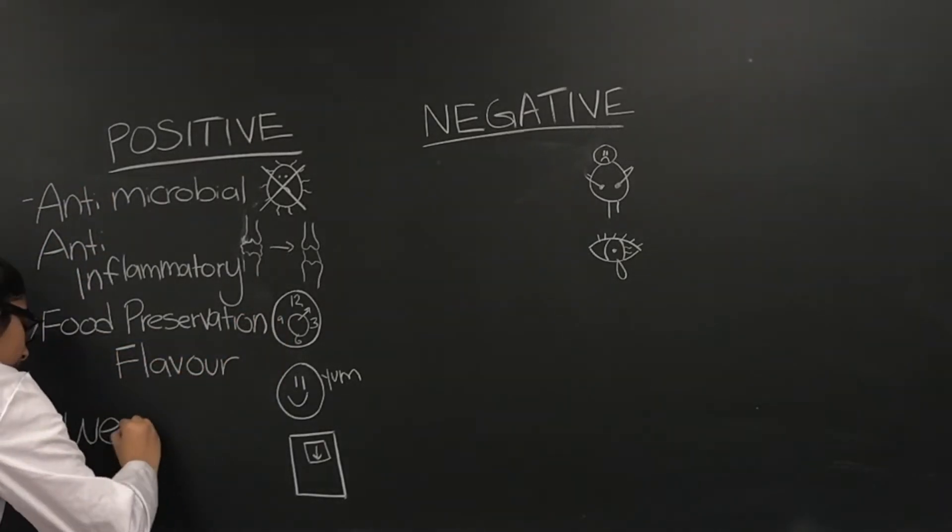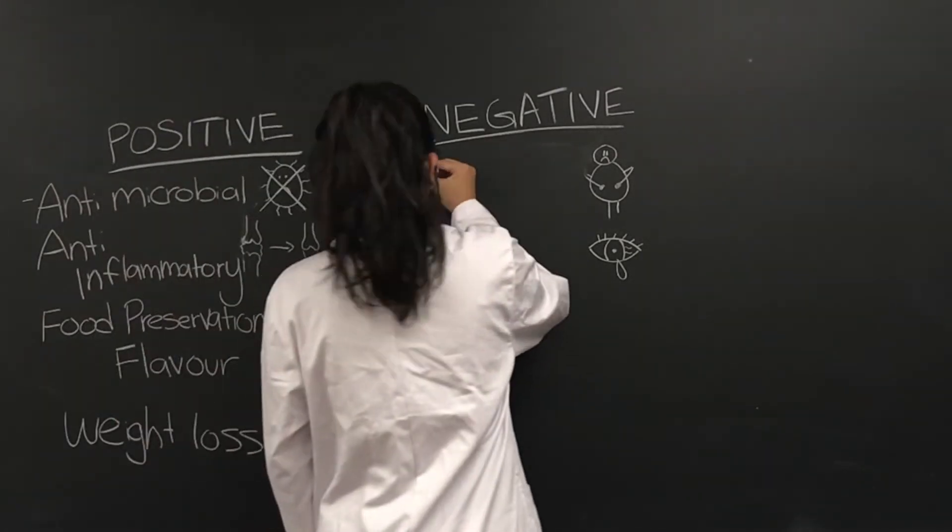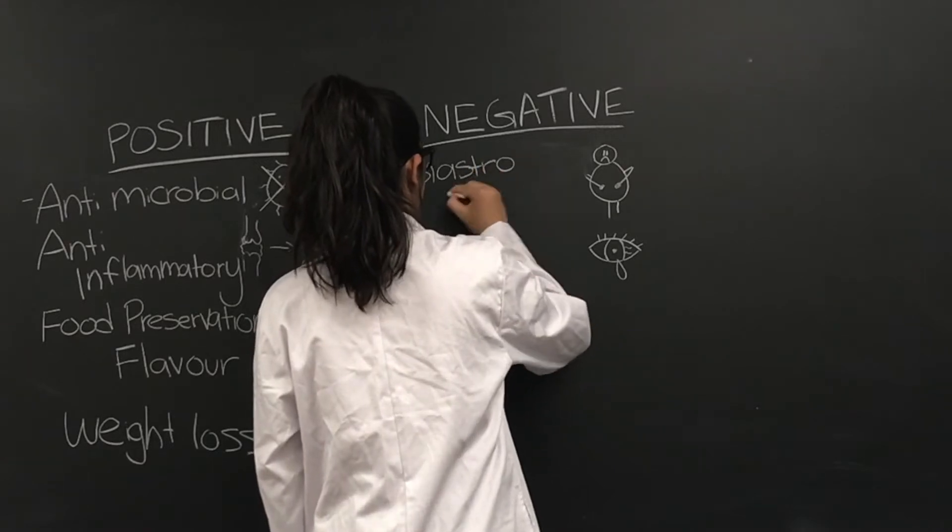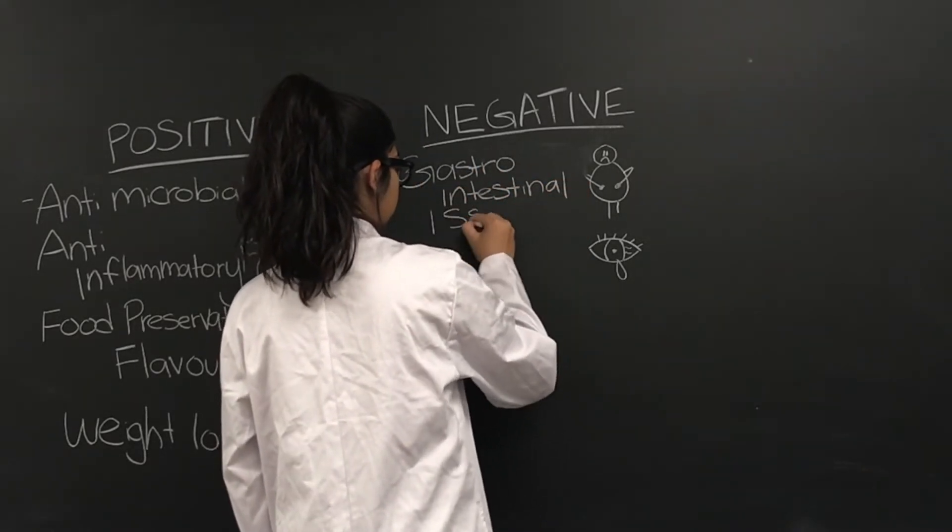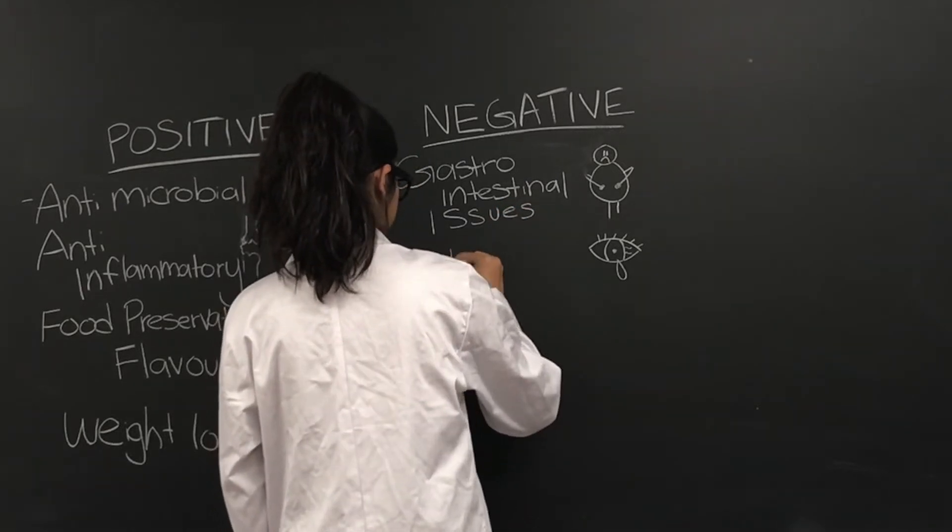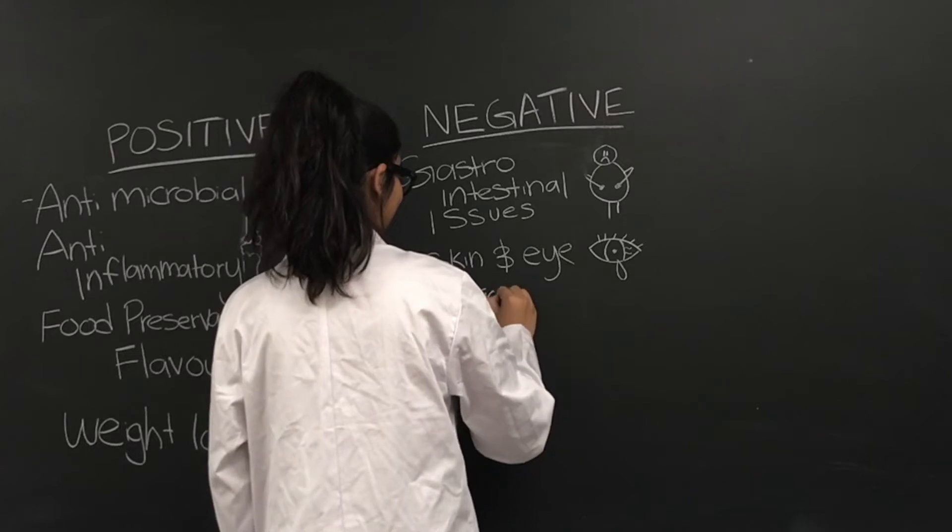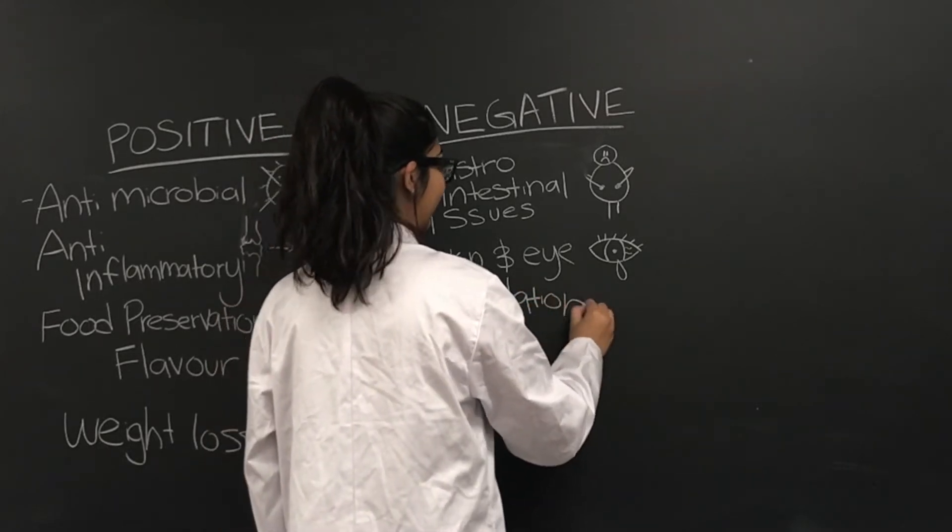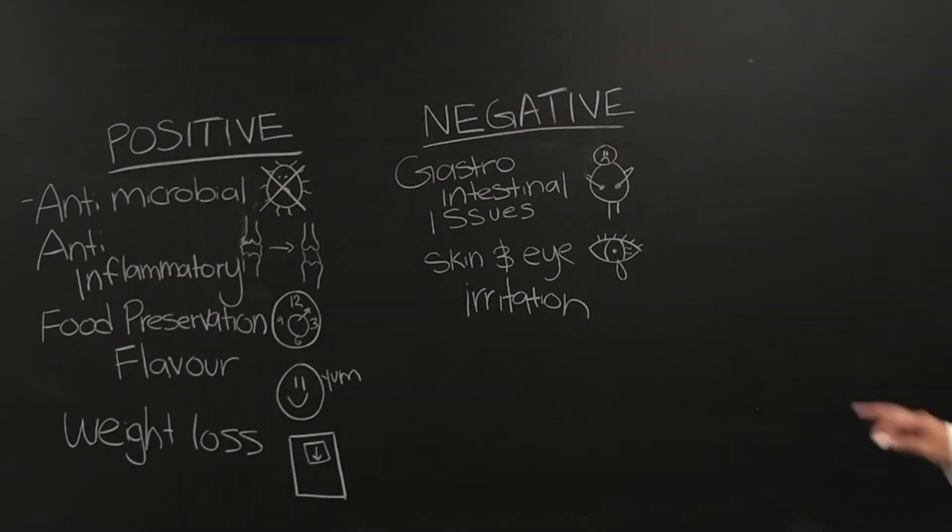Some of the negative or non-desirable effects of consuming spicy food may include gastrointestinal effects, as there is some correlation between eating extremely spicy food frequently and the development or aggravation of stomach ulcers. Also, handling very spicy peppers may cause skin and eye irritations. However, it is important to remember that the data is still pretty sparse and overall inconclusive.